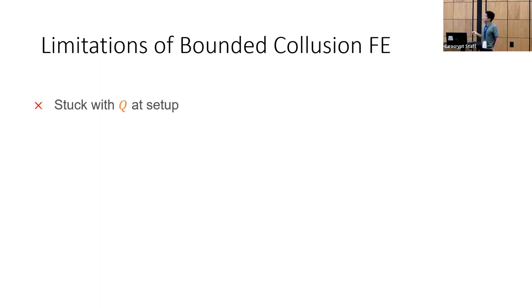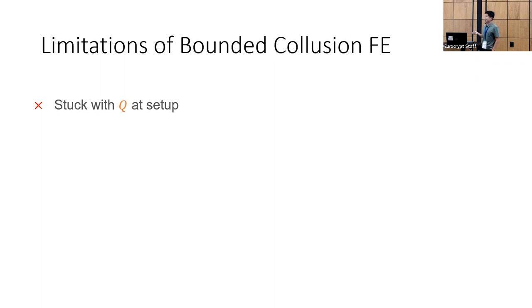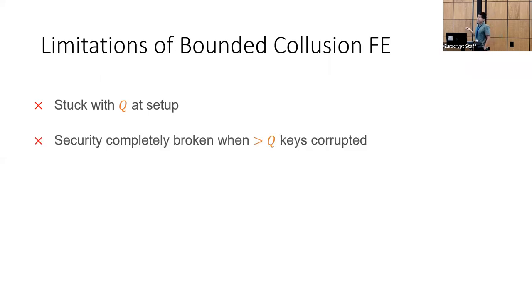From a practical perspective, having this collusion bound is pretty limiting. At setup time, you have to decide what your collusion bound is — you need foresight on how you're actually going to use your functional encryption system. And if an adversary happens to get their hands on more than Q keys somehow, there is no security at all in your system.